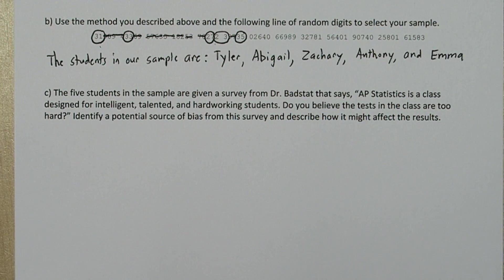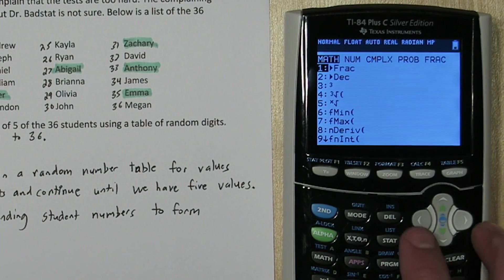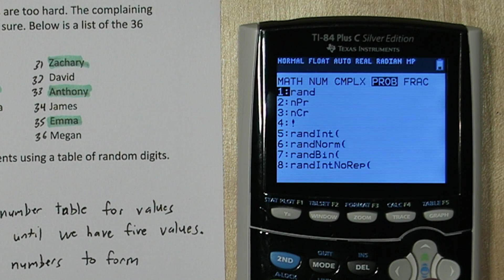Before we move on to part C, let me show you a way to do this on the calculator instead of using the table of random digits. Press the math button and go over to PRB, probability.